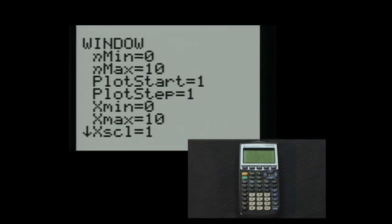We see that the current setting has nmin as 0, which is what we chose in the y equals screen. So we will leave it there. We will keep nmax at 10 to view 10 iterations after the initial value.